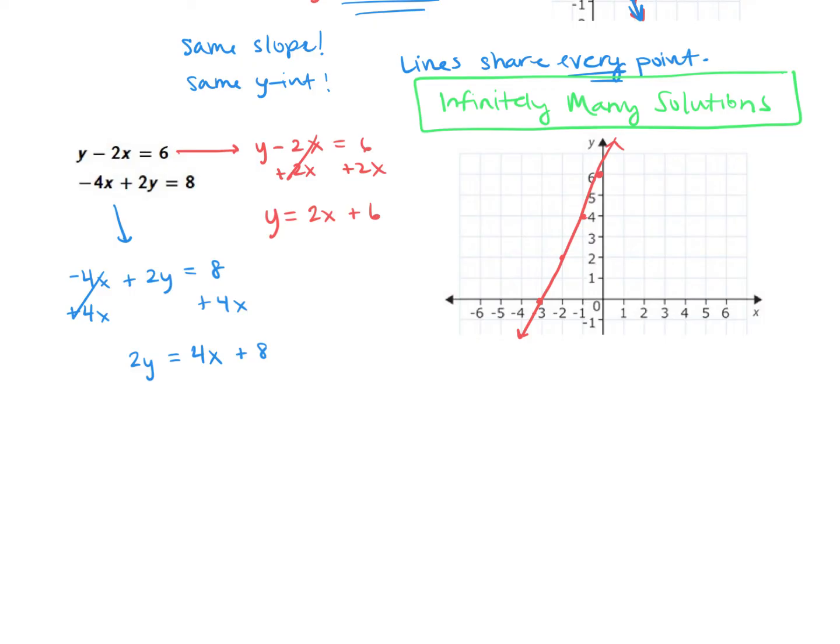The 4x and the 8 right here are not like terms, so we're going to write the 4x first plus 8. Next, I want to make sure that I'm keeping all the same signs. It was a positive 4x and a positive 8. Last step, let's divide everything by 2 to get that 2 away from the y.